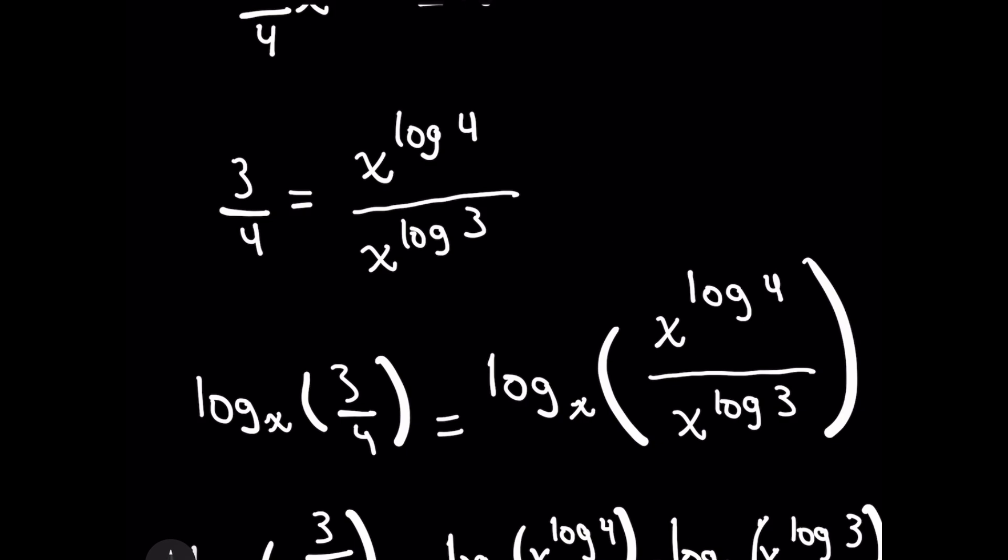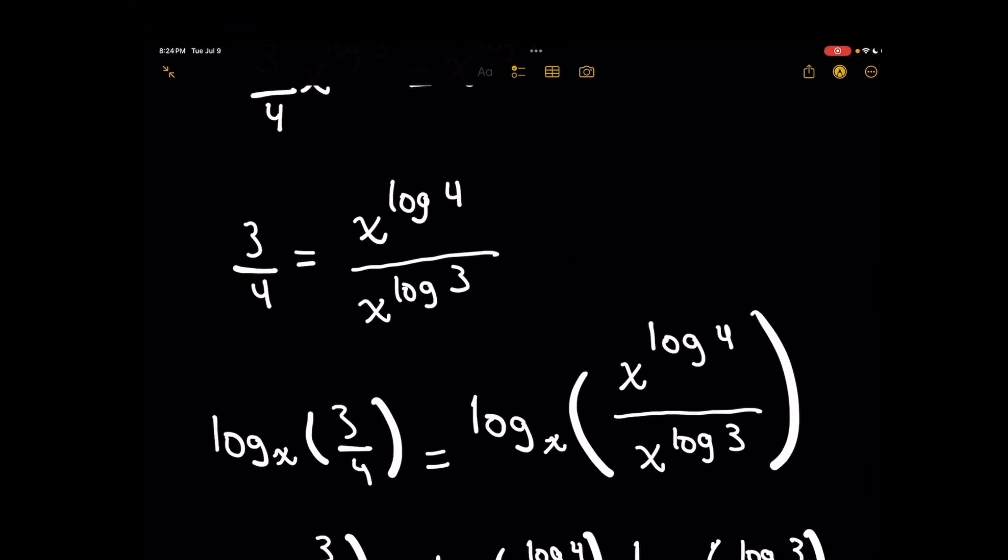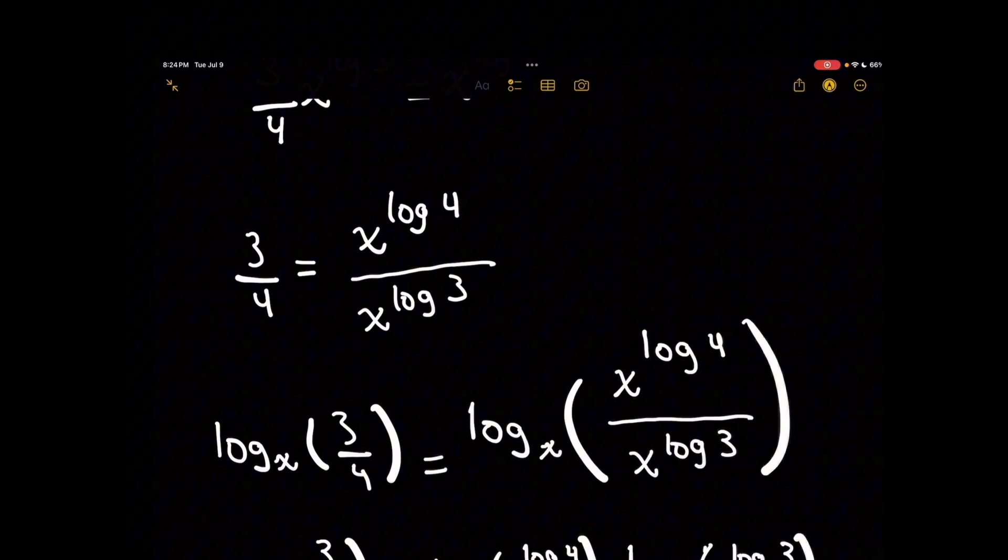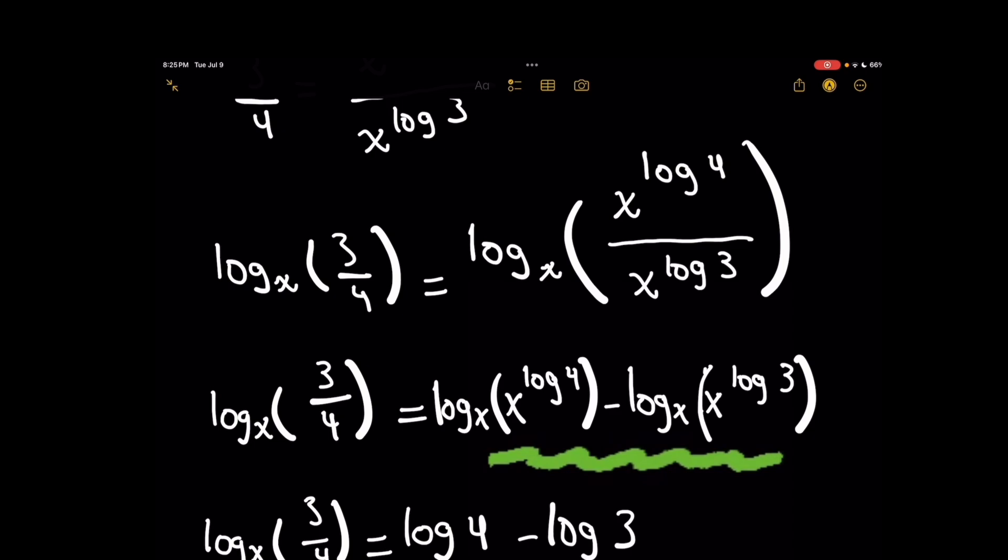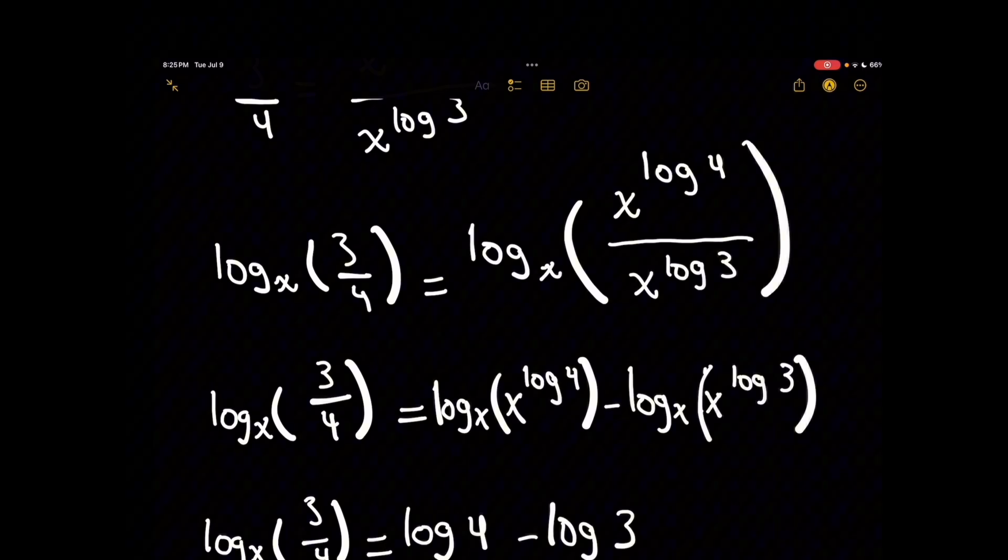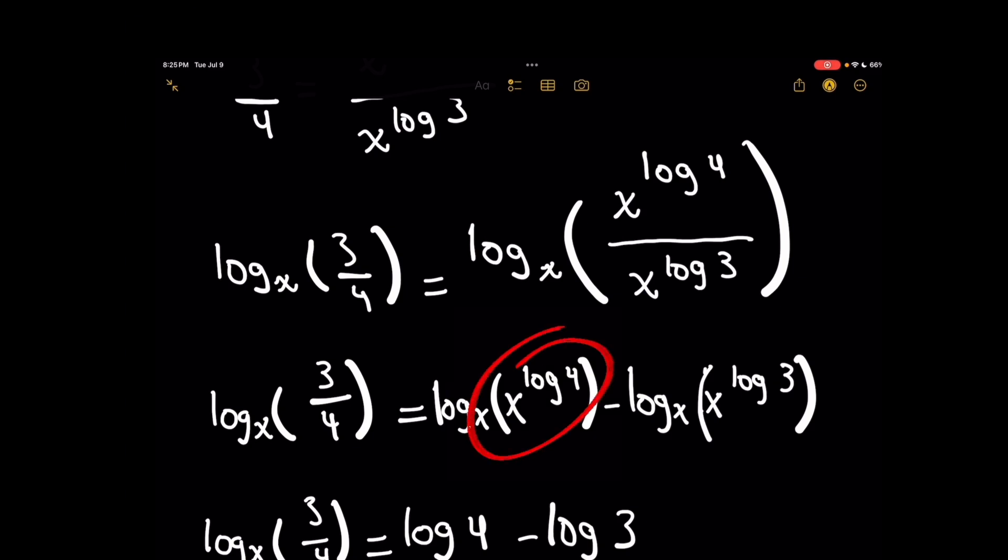And already now, it's apparent that we can use a really cool property of logarithms. Remember that the log of A over B is the same as the log of A minus the log of B. When we split up the right-hand side, we have log base x of x raised to the log 4 minus the log base x of x raised to the log 3.